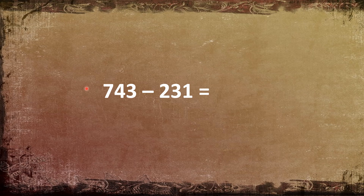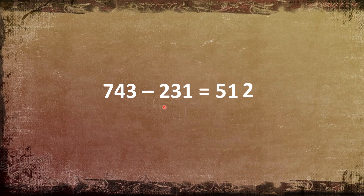743 minus 231. 3 minus 1 is equal to 2. 4 minus 3 is equal to 1. 7 minus 2 is equal to 5. So the answer is 512. 743 minus 231 is equal to 512.